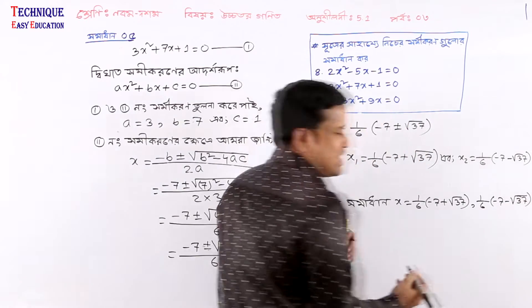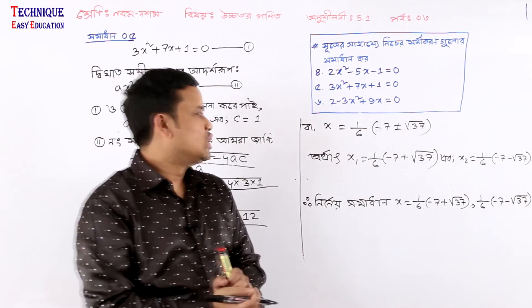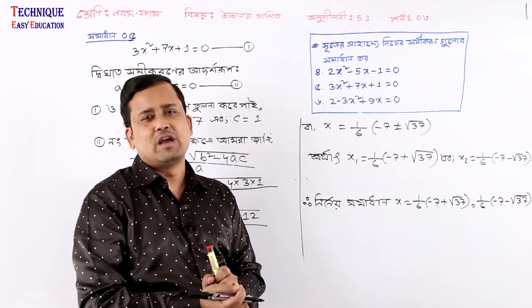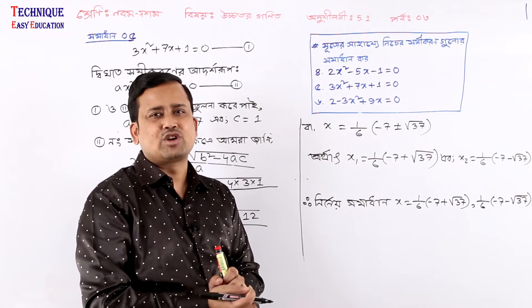Look, the final answer is: x1 equals 1 by 6 times minus 7 plus root 37, and x2 equals 1 by 6 times minus 7 minus root 37. So we get the answer to this equation.